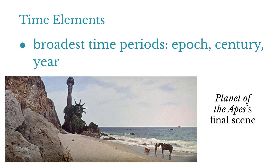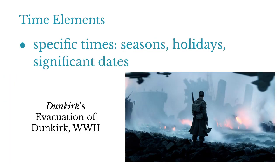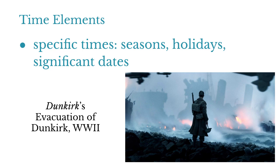Tolkien includes a map in the front of his book as well — it's not quite so childlike. Some of those places are pretty dark; they don't really want to go to Mordor. But it includes the same features: geographical features, where the forests are, and it puts places and the people who live in those places in relationship to each other.